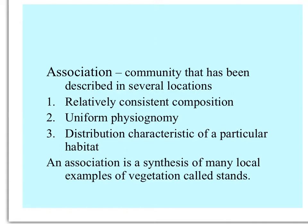In the realm of plant ecology, we can talk about an association, which is a community that's been described in several different locations. That community usually has consistent composition — more or less the same species present. It looks the same; it has a uniform physiognomy, and it has a distribution characteristic of a particular habitat, particular kind of substrate, temperature, rainfall, etc. An association is a synthesis of many local examples of vegetation, and those local examples we can call stands.